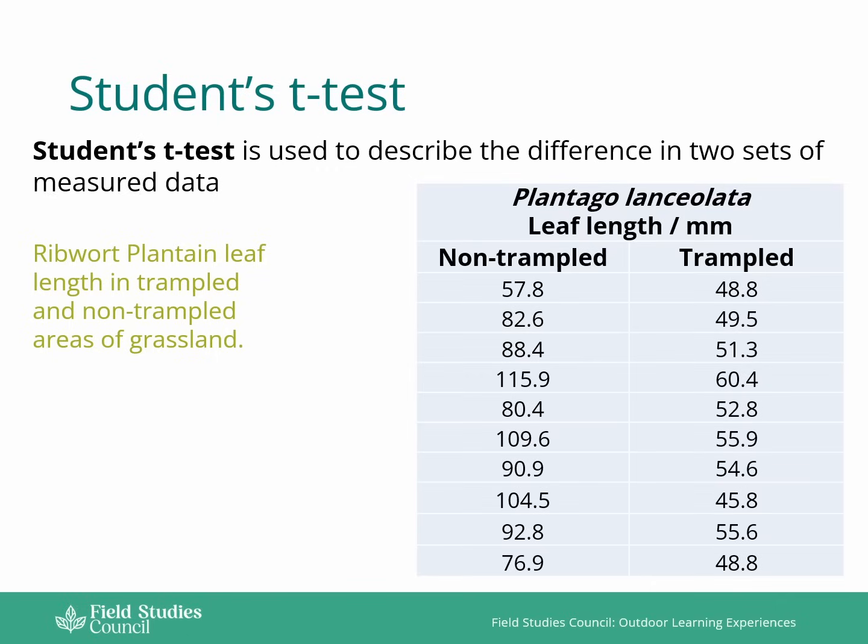Here we have an example of a common grassland plant, ribwort plantain, where we've measured leaf length in trampled and non-trampled areas of grassland. You can see in the table the measurements that we've received in millimeters.